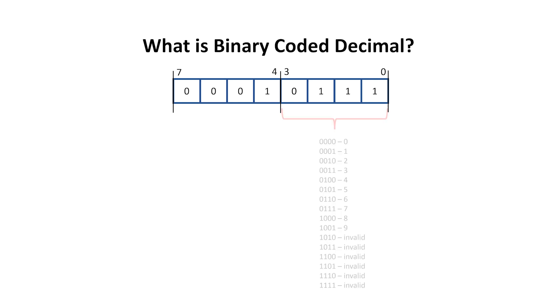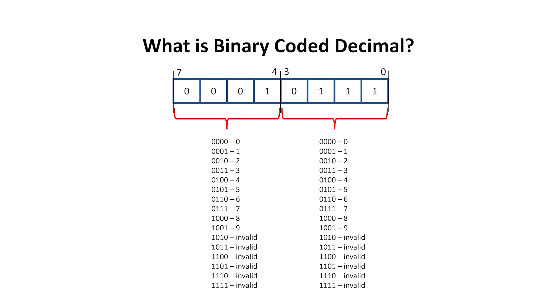In binary coded decimal, we still deal with 4-bit chunks at a time like we do with hexadecimal, but only the first 10 combinations of the bit patterns are valid. These take on the values 0 through 9, and the other combinations are considered to be invalid. In binary coded decimal, a byte can take a number between 0 and 99. The number here is 1, 7, which is just plain old 17.